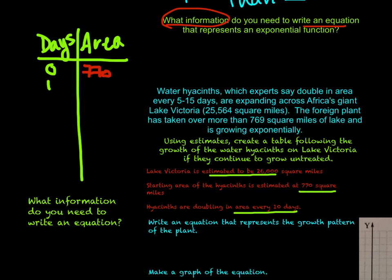If we look at the next 10 days that have gone by, or so the first group of 10 days, we're now at 1,540 square miles. The next set of 10 days, so now we're 20 days that have gone by, we would have this amount be doubled. And so that means we are at 3,080.